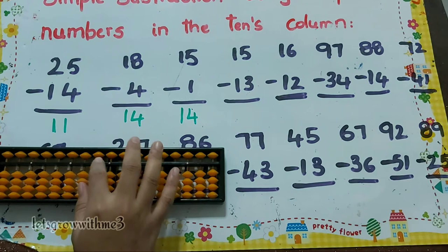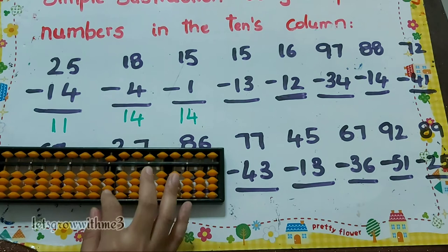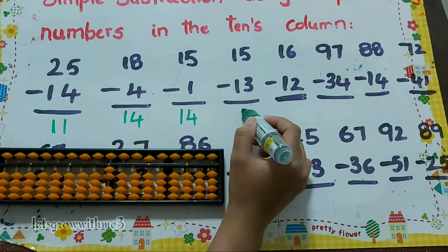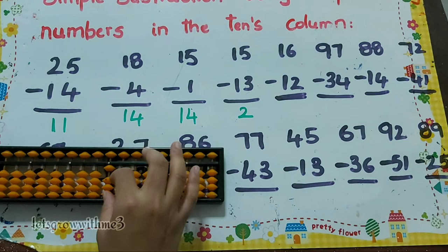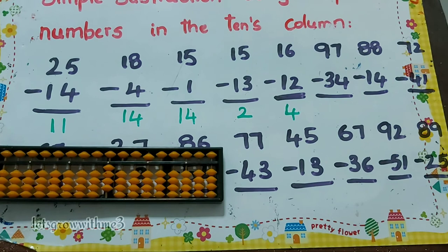Next one, 15 minus 13: minus 1, minus 3. How to do minus 3? Minus 5 plus 2, so the answer is 2. Next one, 16 minus 12: minus 1, minus 2. How to do minus 2? Minus 5 plus 3, so the answer is 4.